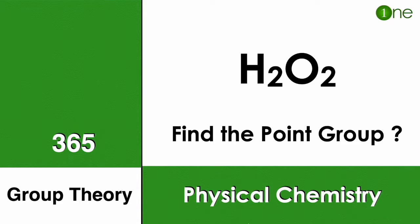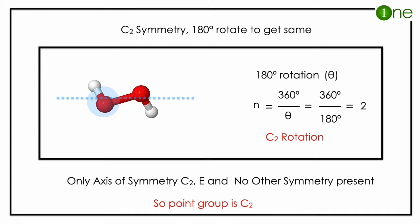Welcome to One Chemistry. This is the 365 Chemistry Series, Group Theory problems. Here, hydrogen peroxide is given. You have to find the point group of the molecule. To find the point group, we have to find the symmetry elements.